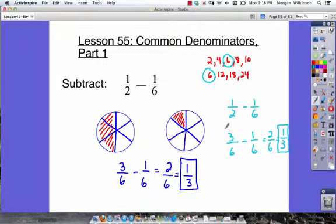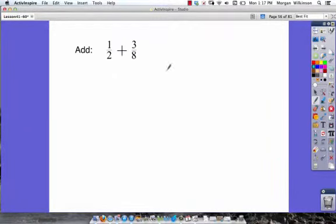Learning how to do these problems without having to draw up pictures will save us quite a bit of time. Let's go ahead and practice that on our next slide. What we want to do now is add 1 half plus 3 eighths. So, we've got to find the least common multiple of 2 and 8.